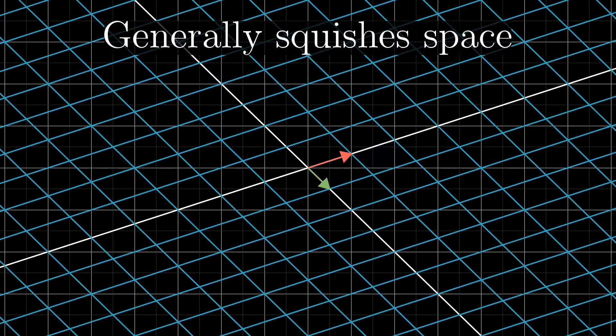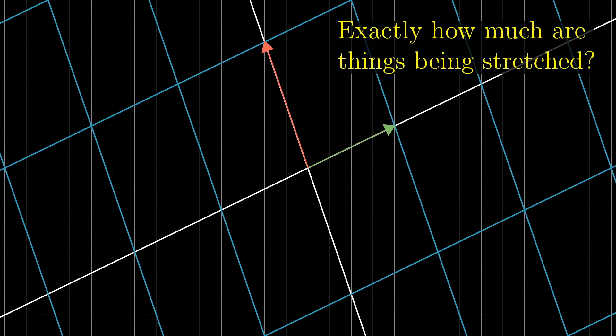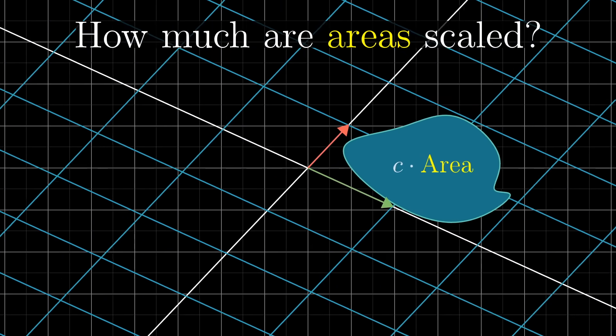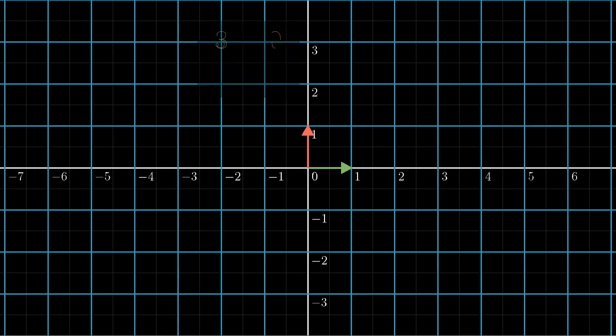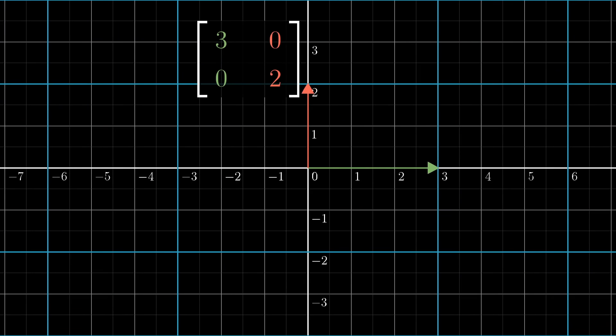One thing that turns out to be pretty useful for understanding one of these transformations is to measure exactly how much it stretches or squishes things. More specifically, to measure the factor by which the area of a given region increases or decreases. For example, look at the matrix with columns 3, 0 and 0, 2. It scales i-hat by a factor of 3 and scales j-hat by a factor of 2.